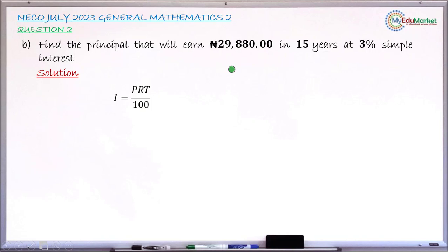In the question, we have to find the principal that will earn 29,880. This is the interest. In 15 years, if the rate is 3%, to find our answer, we'll substitute I, T, and R in the formula.